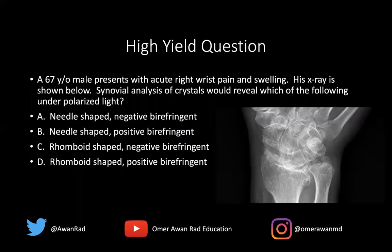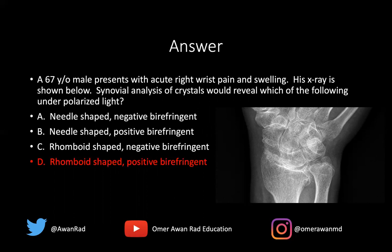Coming back to the high-yield question: the 67-year-old male presents with acute right wrist pain and swelling. Looking at the wrist X-ray, we see chondrocalcinosis in the TFCC, and degenerative changes pronounced at the radiocarpal joint — osteoarthritis doesn't really involve the radiocarpal joint — with joint space loss and subchondrosclerosis. This is characteristic of calcium pyrophosphate deposition, so synovial analysis will reveal rhomboid-shaped positively birefringent crystals. D is the right answer. Thank you for your attention — join us next week for another high-yield USMLE Domination.